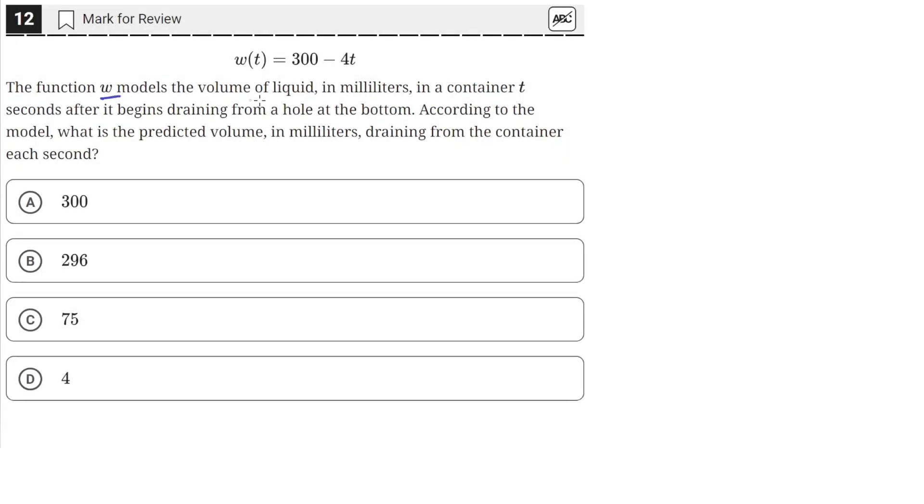The function w models the volume of liquid in milliliters in a container t seconds after it begins draining from a hole at the bottom. According to the model, what is the predicted volume in milliliters draining from the container each second?